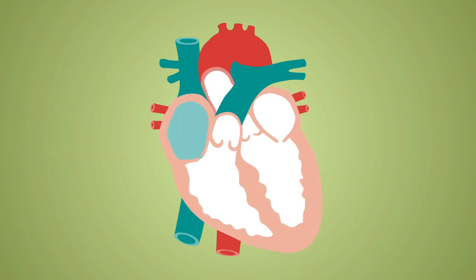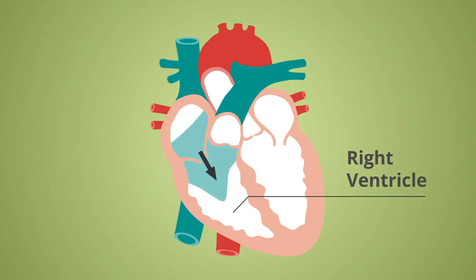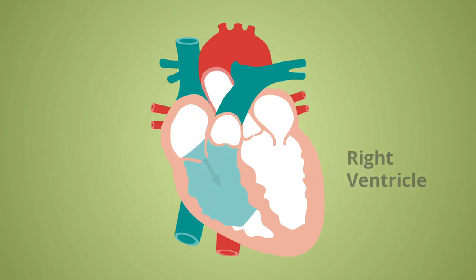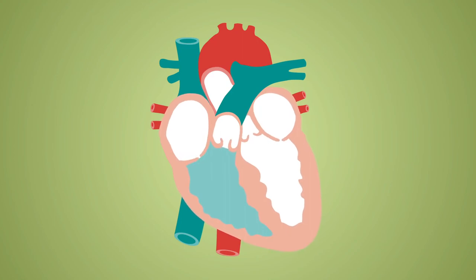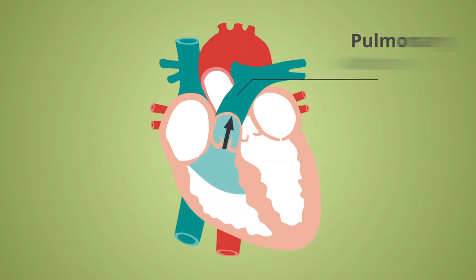The right atrium contracts, forcing blood through the tricuspid valve and into the right ventricle. Following a momentary pause to allow ventricular filling, the right ventricle then contracts, with the resultant pressure causing the shutting of the tricuspid valve and the opening of the pulmonary valve, ejecting deoxygenated blood into the pulmonary artery.